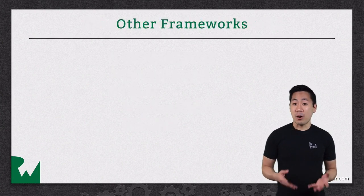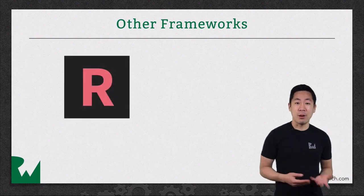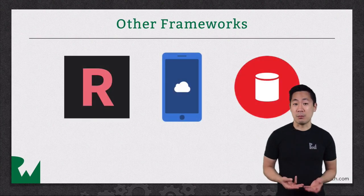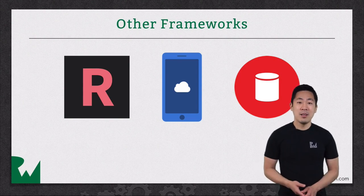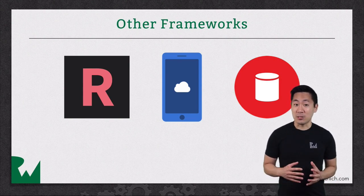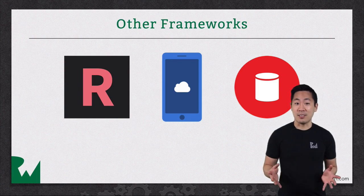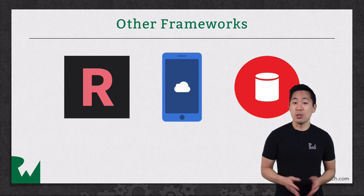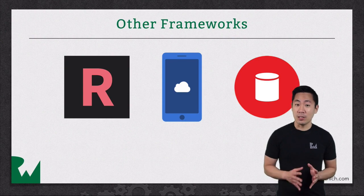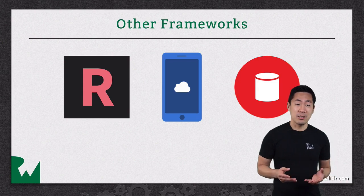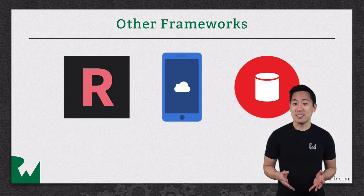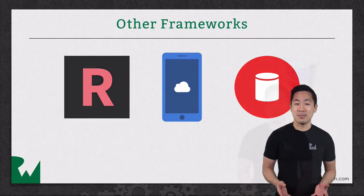There are also many third-party options, such as Realm, Parse, and Couchbase Mobile, to name a few. Realm is a cross-platform database built specifically for mobile. Parse has both a local data store and also syncs your data to the cloud. And Couchbase is a NoSQL database that runs locally on-device with an optional sync system. You'll find some links below in the notes for more information, and we also have some tutorials on the site to cover some of these systems as well.